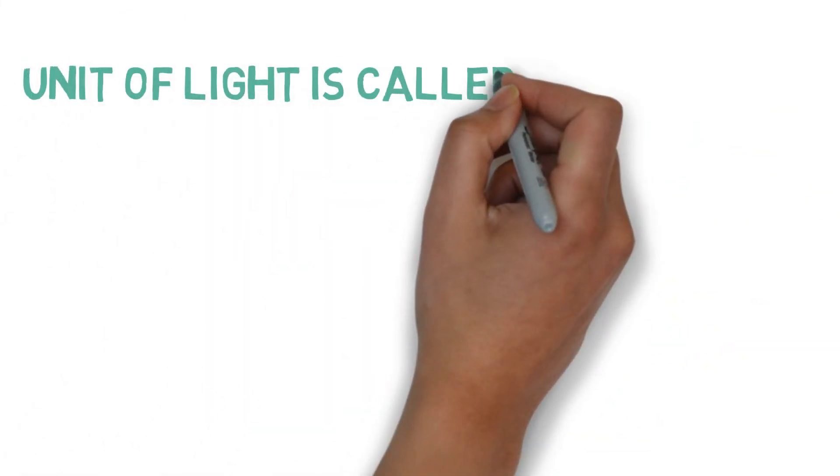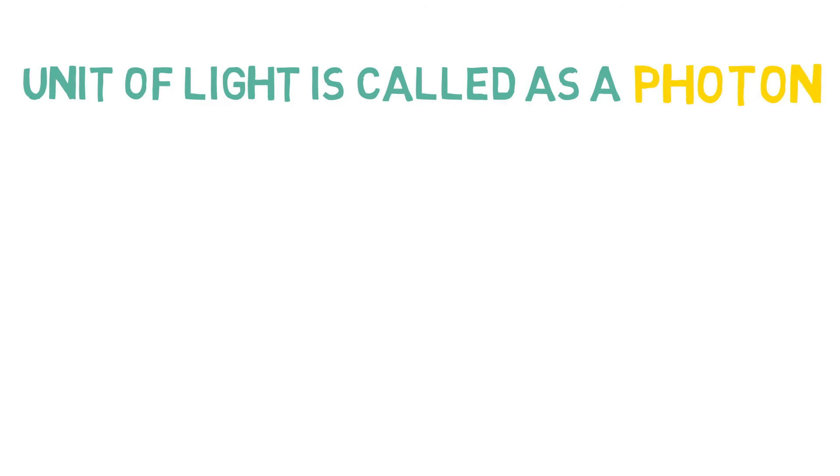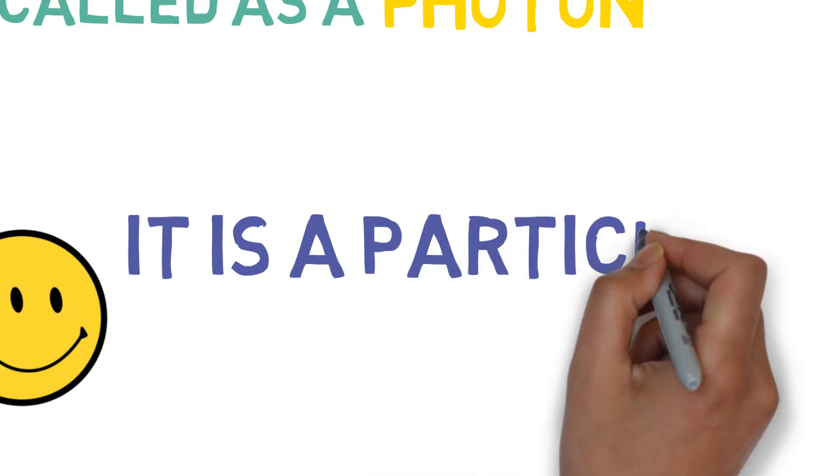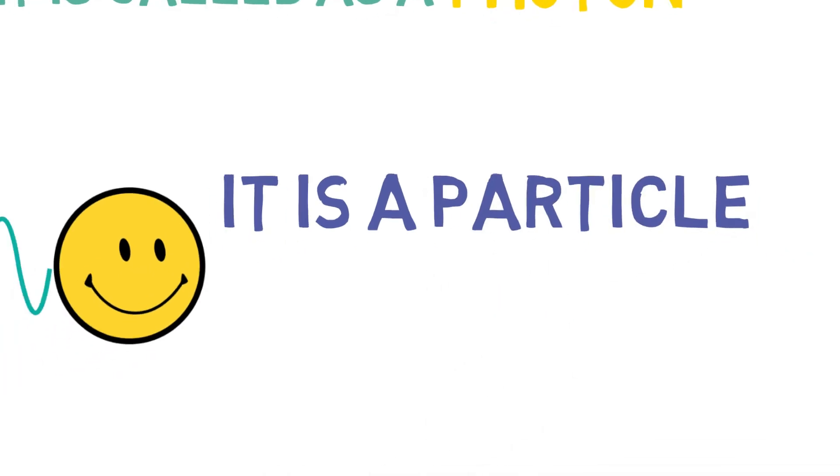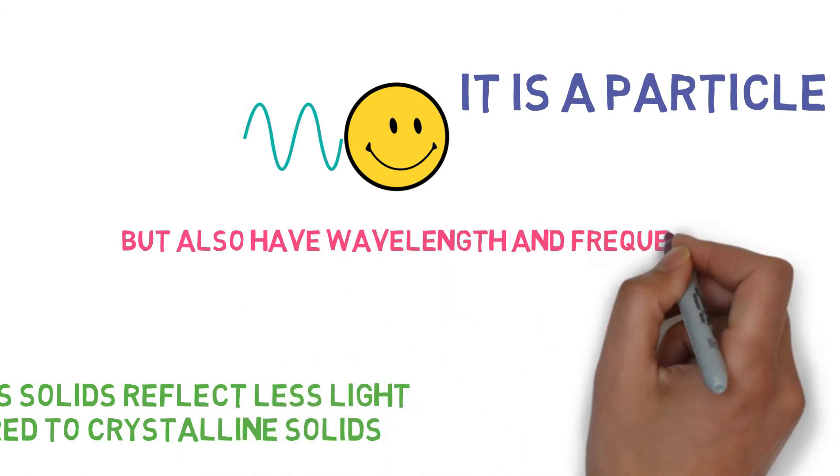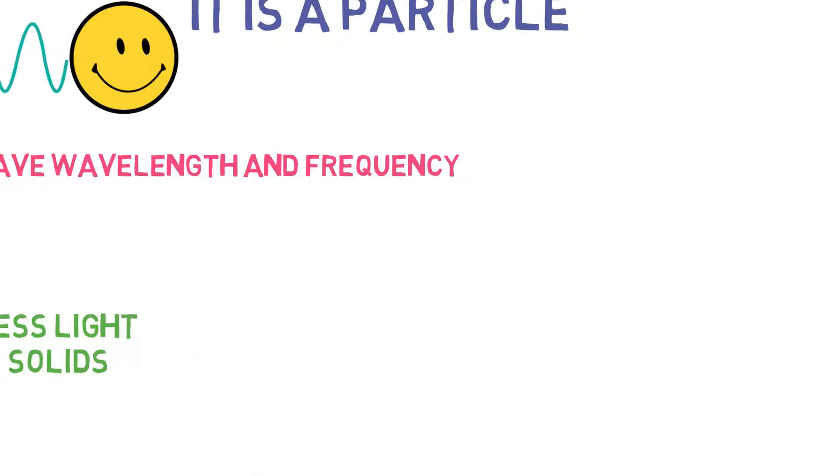A unit of light is called a photon, and photon has some special characteristics to it. It is a particle, but this particle has some wave-like properties. It also has a specific wavelength and frequency attached to it.